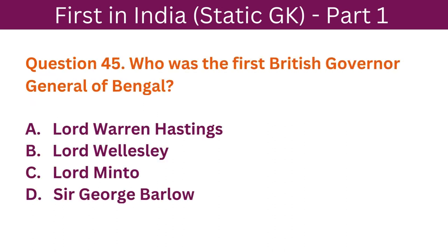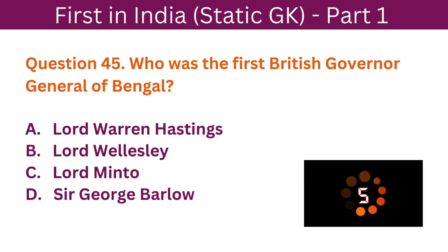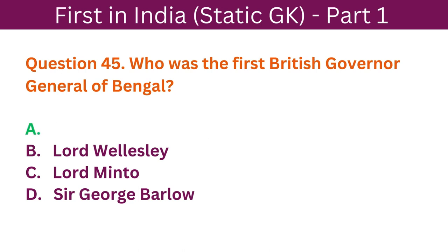Question 45: Who was the first British Governor General of Bengal? A. Lord Warren Hastings. B. Lord Wellesley. C. Lord Minto. D. Sir George Barlow. The correct answer is A. Lord Warren Hastings.